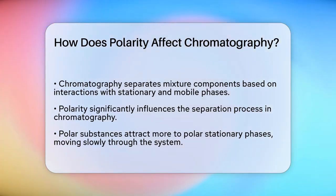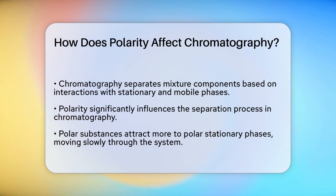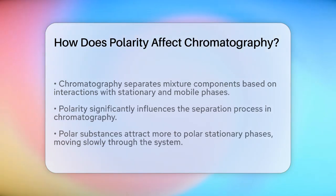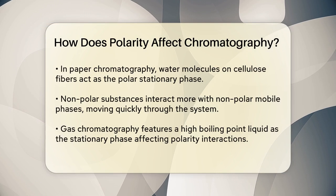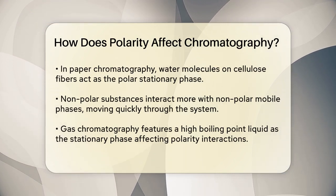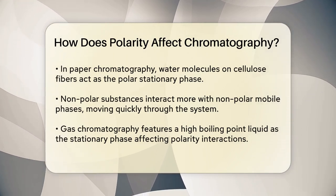In chromatography, polar substances have a stronger attraction to polar stationary phases. This means that if you have a polar stationary phase, like the water molecules in paper chromatography, polar substances will interact strongly with it and move more slowly through the system. For example, in paper chromatography, the stationary phase is essentially the water molecules absorbed on the cellulose fibers of the paper. Polar substances will stick to these water molecules, causing them to move up the paper more slowly compared to nonpolar substances.